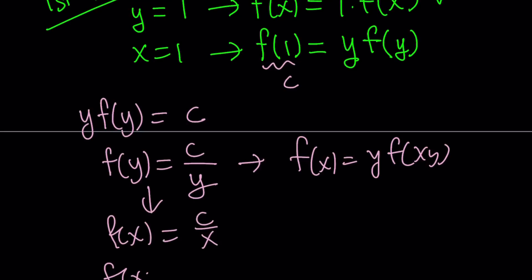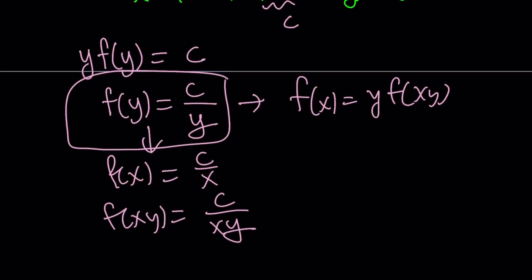So my original equation was f(x) equals y f(xy). Now, f(y) equals c over y basically means f(x) equals c over x, and f(xy) equals c over xy. So we can basically, once we get an expression for the function, we can replace the variable with whatever other variable we have. It doesn't matter. They're just dummy variables. So let's go ahead and plug it in. f(x) should be c over x. Does that equal the right hand side? y is y. f(xy) is c over xy.